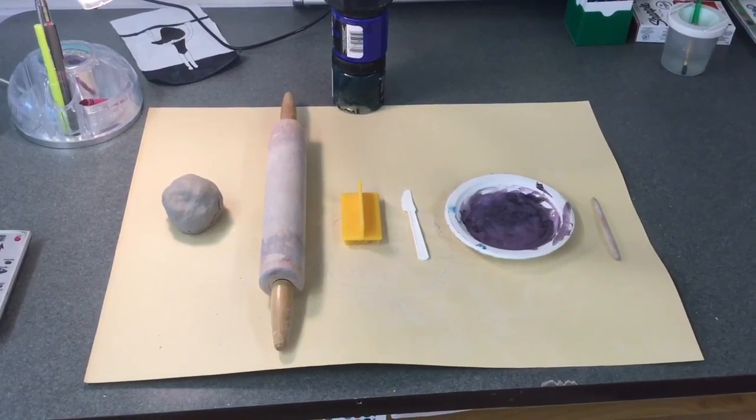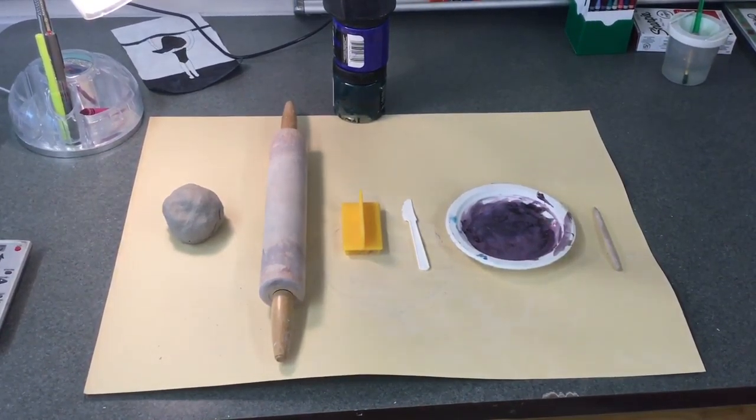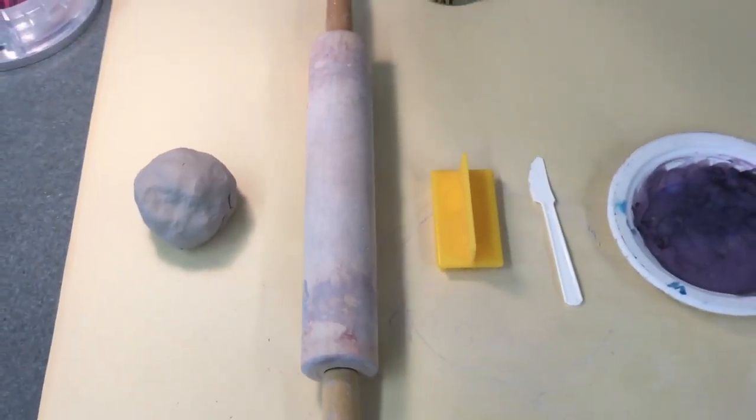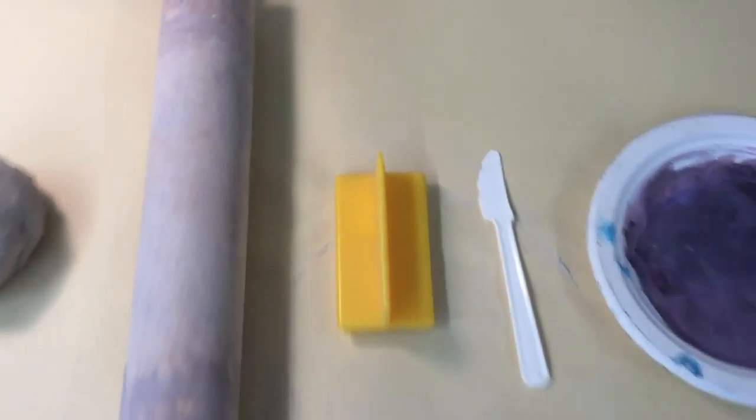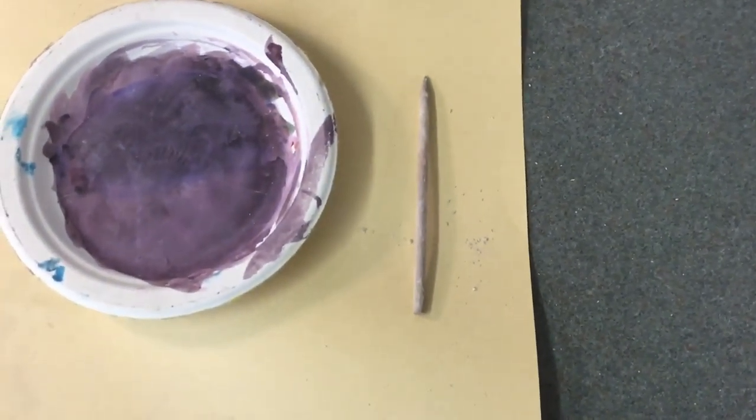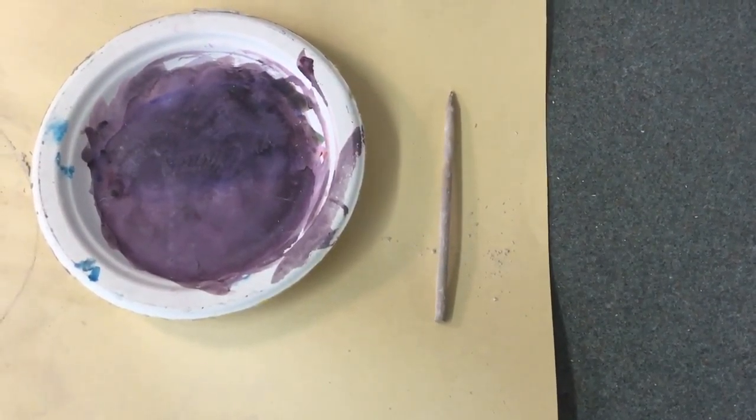To make your clay moons with texture, you are going to need the following tools. First, a piece of clay, then a rolling pin to help flatten it out, a texture pad to create the perfect texture, a knife, and a paper plate for the perfect circle, and a wooden tool for adding your name and one Q on the back.